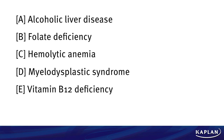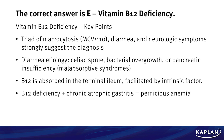The correct answer here is choice E, vitamin B12 deficiency. Some key points about B12 deficiency: number one, it's a macrocytic anemia — so macrocytosis with MCV greater than 110. You're going to see diarrhea. You're going to see neurologic symptoms. That's what strongly suggests this diagnosis.